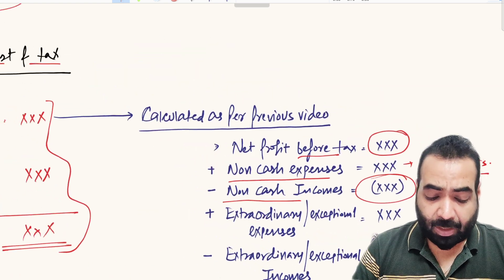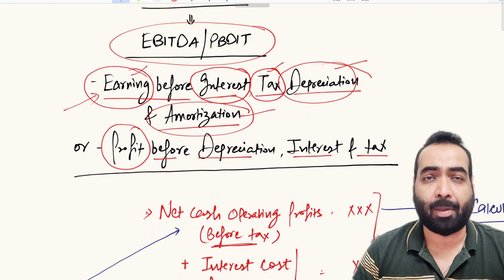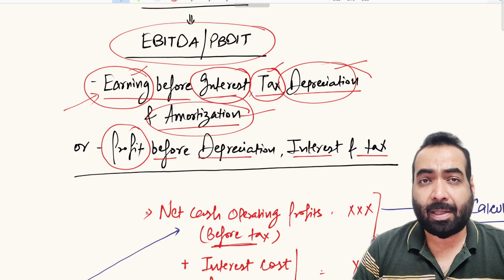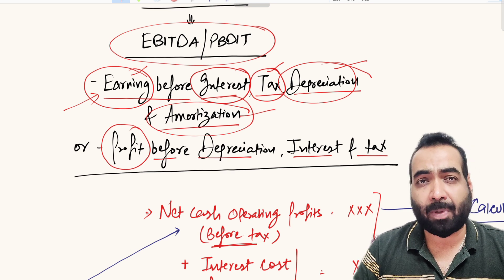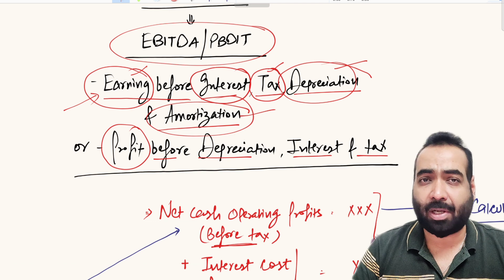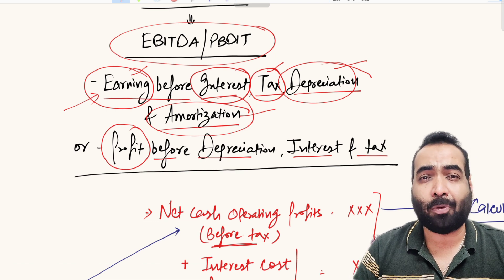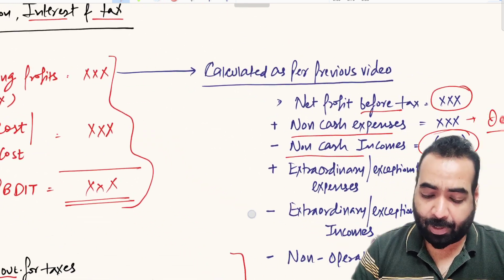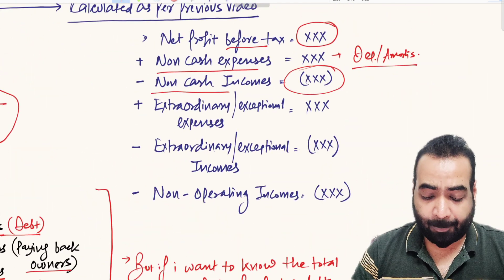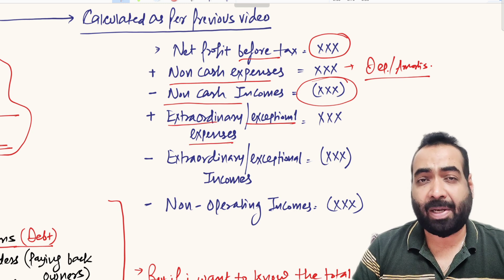You also deduct the non-cash incomes. Although the definition of EBITDA doesn't explicitly say non-cash incomes need to be deducted, this is common practice in the industry. By EBITDA we want to calculate the cash earning of the entity before payment of interest and tax. To calculate accurate cash earnings, we must deduct non-cash incomes and add back extraordinary and exceptional expenses.